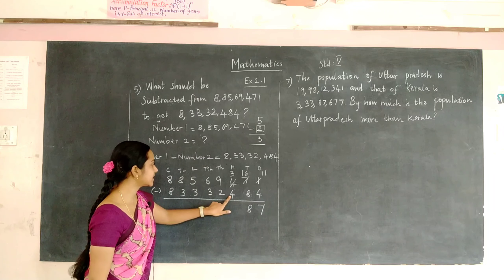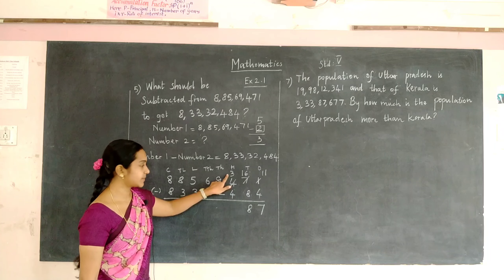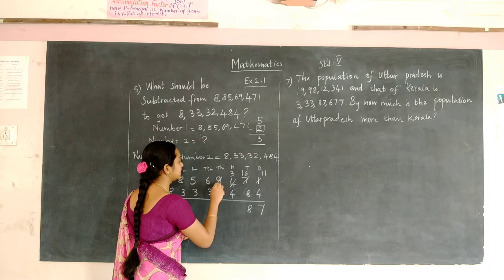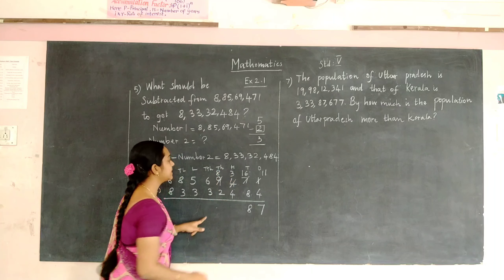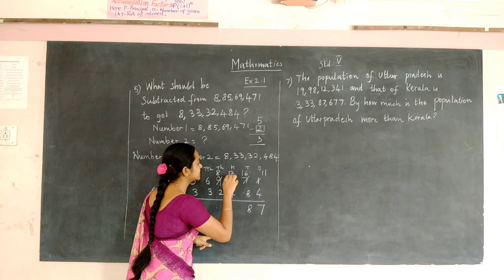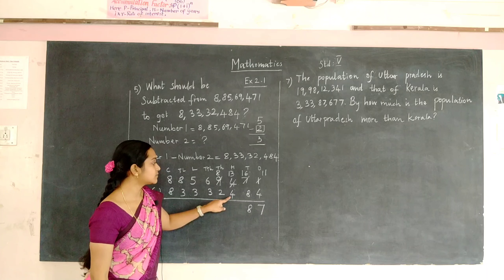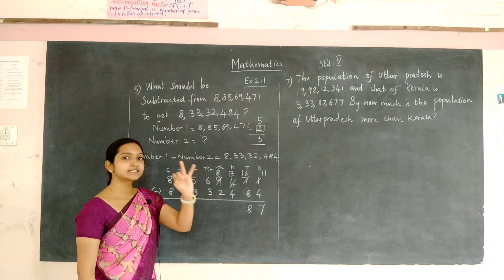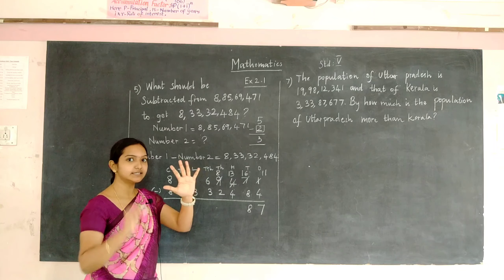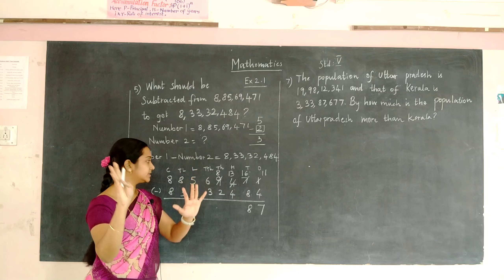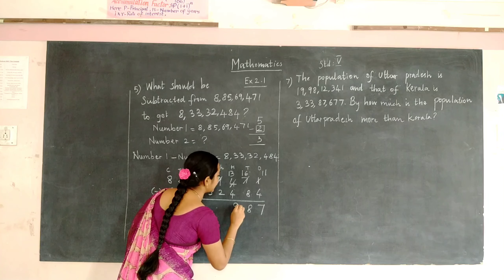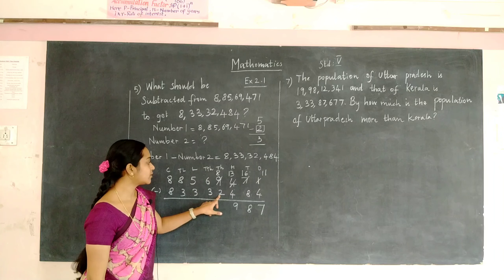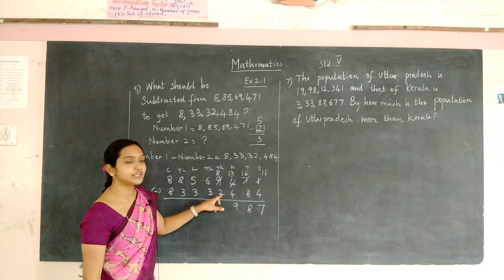Here also 4 is greater than 3, so we cannot subtract. Borrow 1 from the before number — the before number is 9. So 9 becomes 8 and 3 becomes 13. Start counting from 4 until you reach 13: 5, 6, 7, 8, 9, 10, 11, 12, 13. The number is 9.